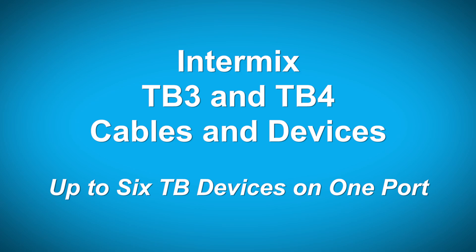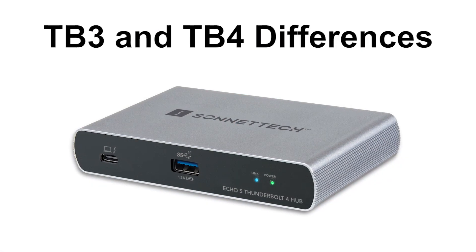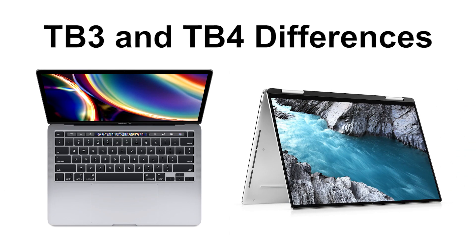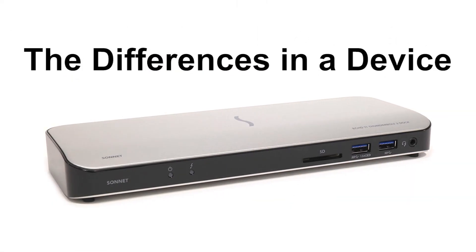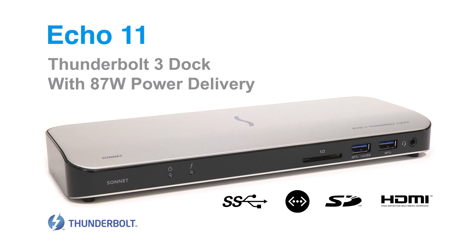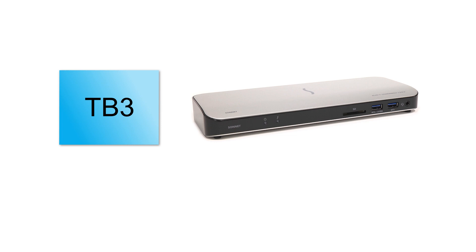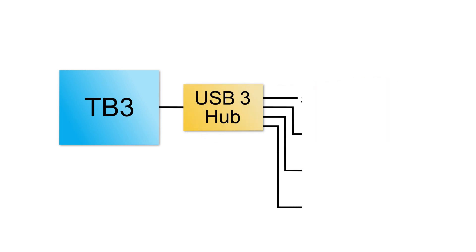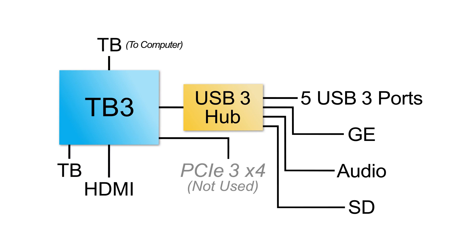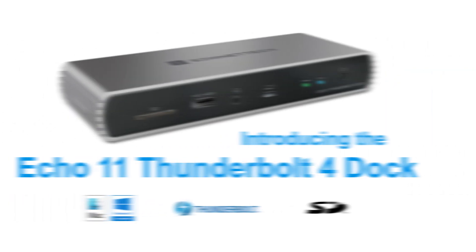You can intermix Thunderbolt 3 and Thunderbolt 4 cables and devices in any order — any combination will work. Now let's explore the differences between Thunderbolt 3 and Thunderbolt 4, first in a device and then in a computer. Here's our Thunderbolt 3 11-port dock and its block diagram. The Thunderbolt controller in the dock connects to a USB hub, which in turn connects to most everything else: the external USB 3 ports, USB to audio, USB 3 to Gigabit Ethernet, and USB 3 to SD slot.